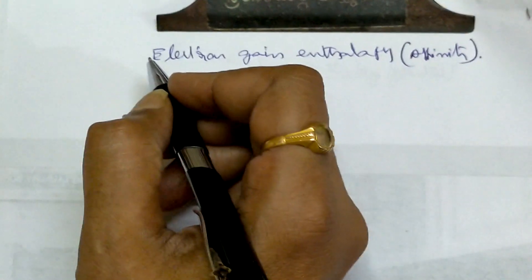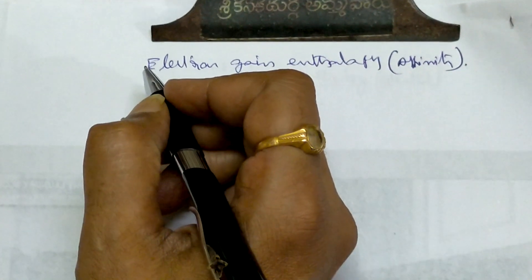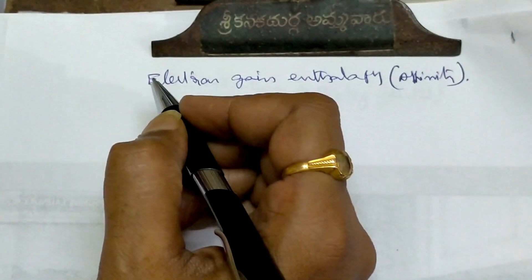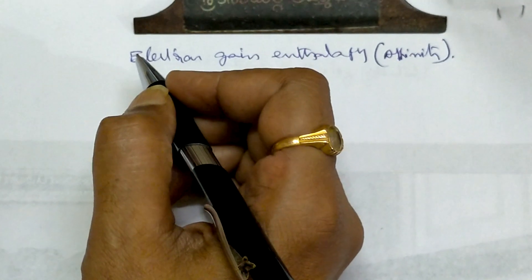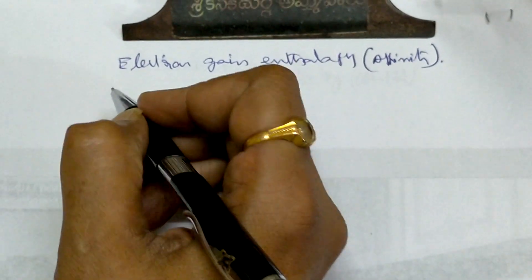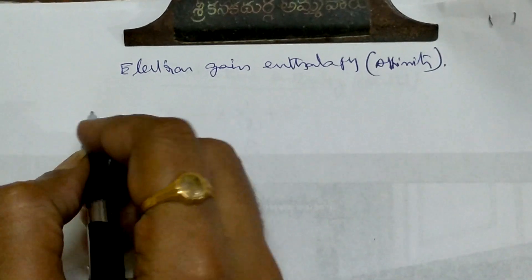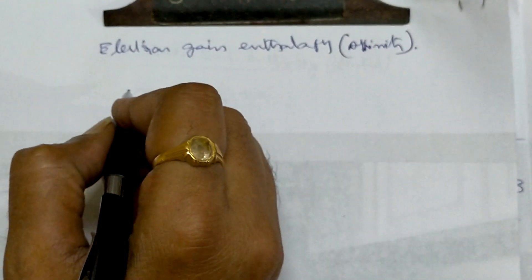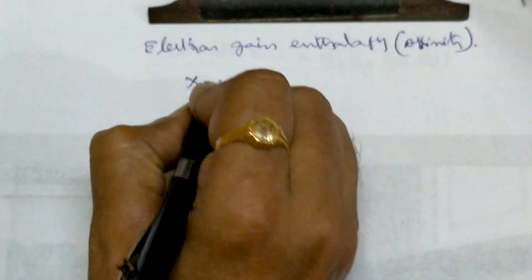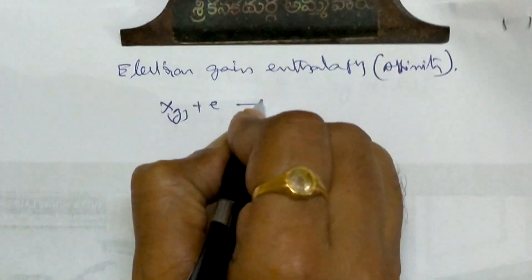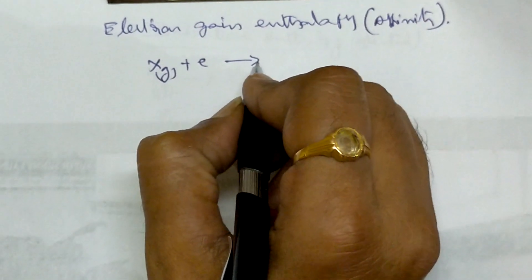For the classification of elements, one period table and periodic properties, we should have seen the ionization potential or ionization enthalpy. One more term is the electron gain enthalpy — earlier we used to call it electron affinity. For this, we take the same gaseous atom; if you are adding an electron to a gaseous atom, the energy released or gained is the electron gain enthalpy.